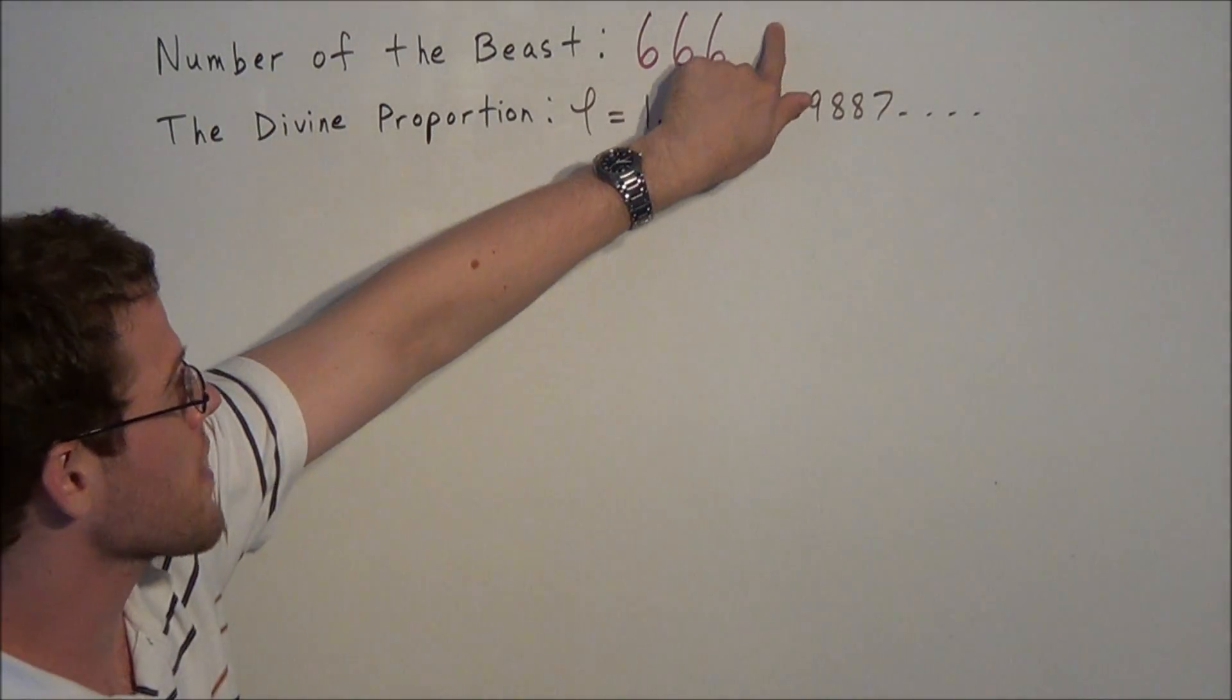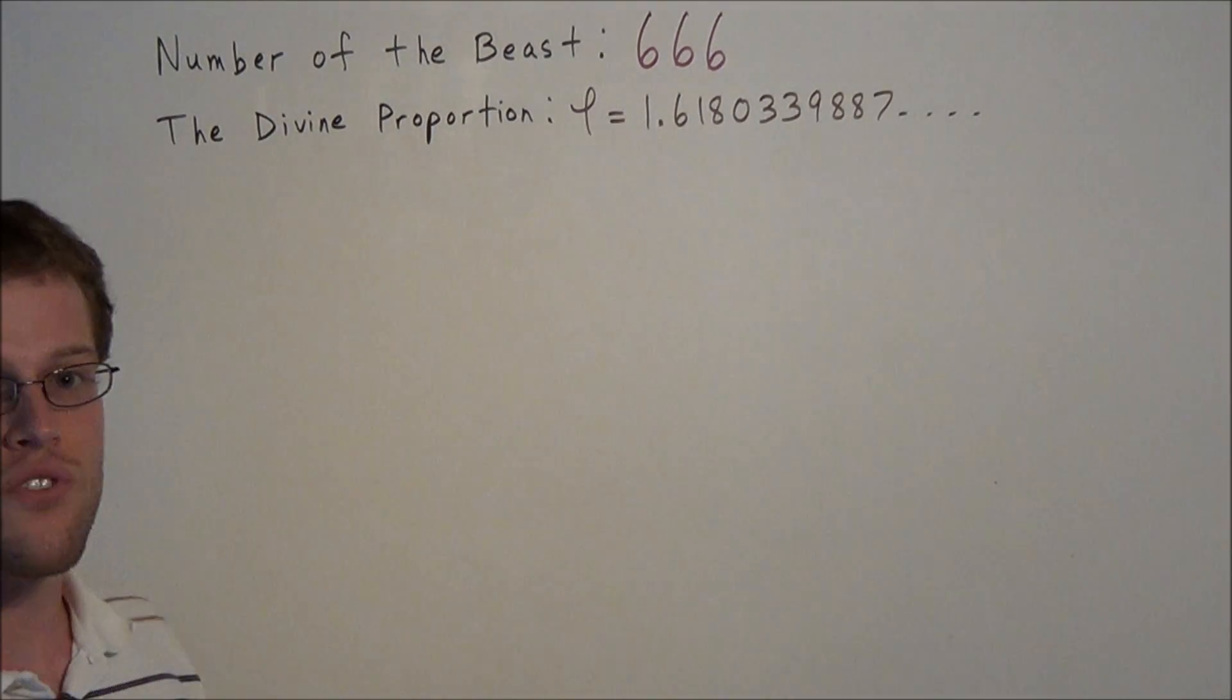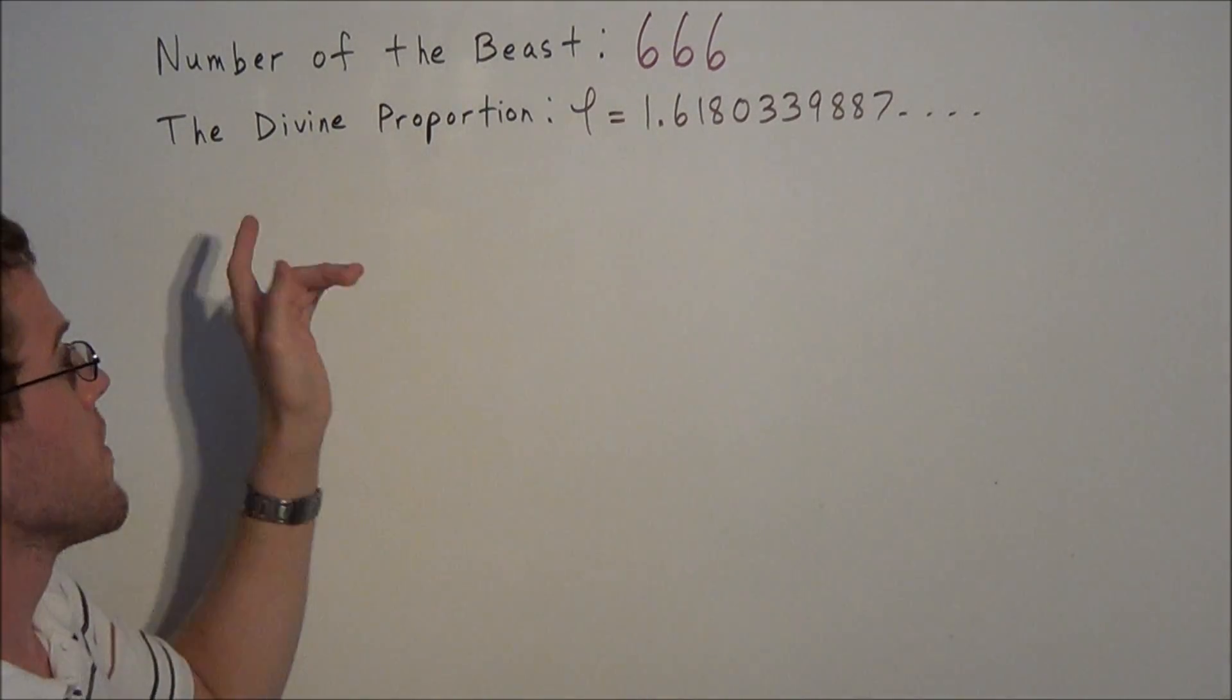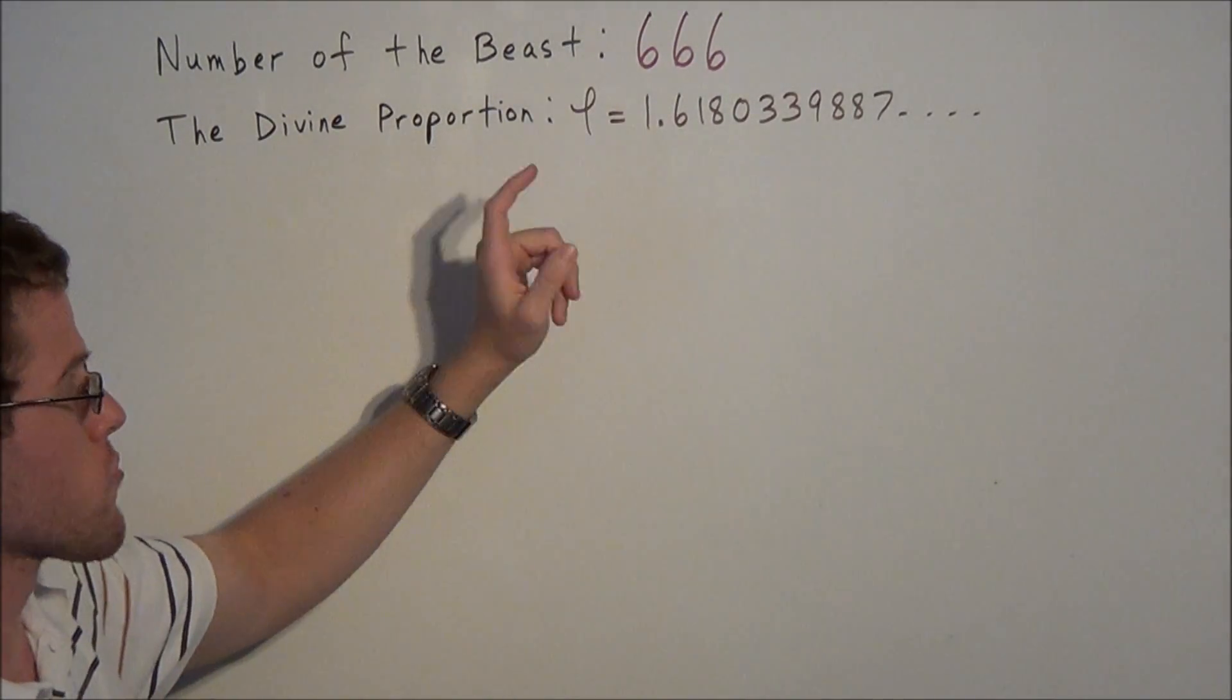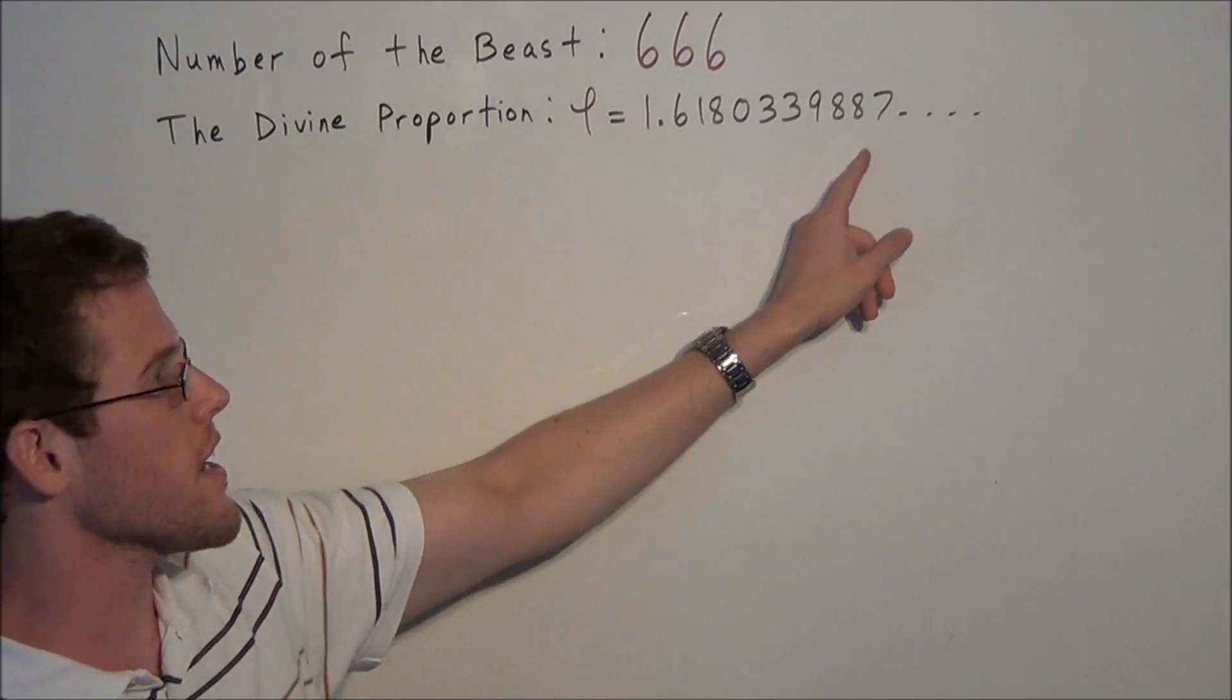Now, to analyze the mathematical significance of this number, I want to consider the divine proportion, also known as the golden ratio, and this number we denote by the Greek letter phi equals 1.6180339887.